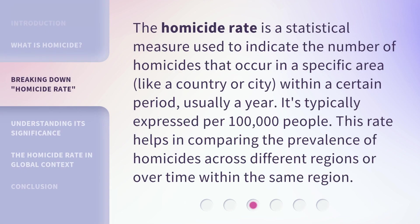The homicide rate is a statistical measure used to indicate the number of homicides that occur in a specific area, like a country or city, within a certain period, usually a year. It's typically expressed per 100,000 people. This rate helps in comparing the prevalence of homicides across different regions or over time within the same region.